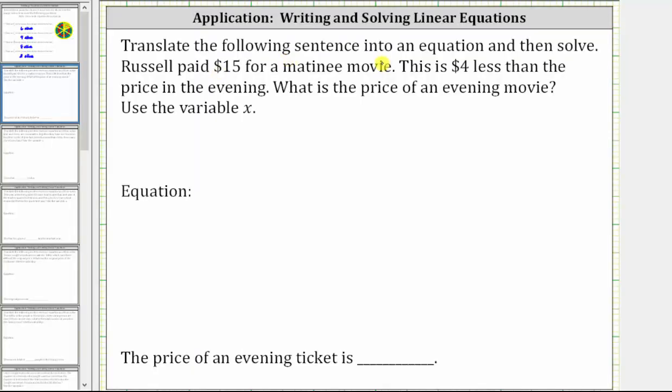We are asked to translate the following sentence into an equation and then solve. Russell paid $15 for a matinee movie. This is $4 less than the price in the evening. What is the price of an evening movie? We're told to use the variable x.